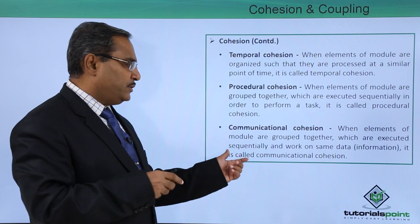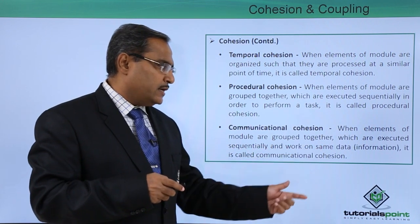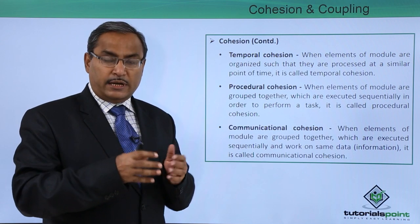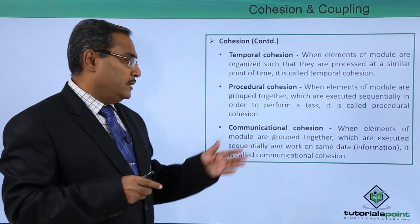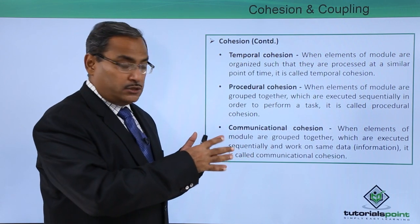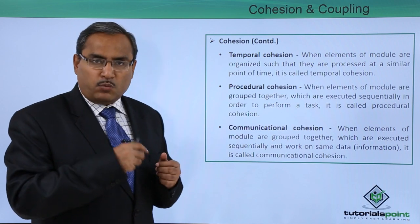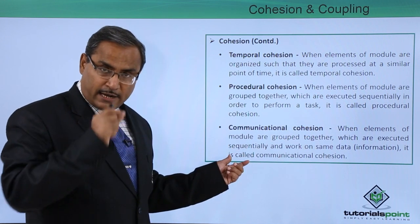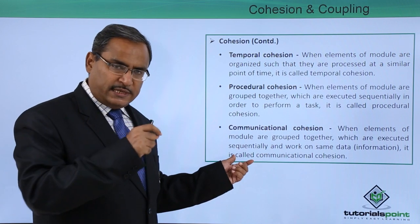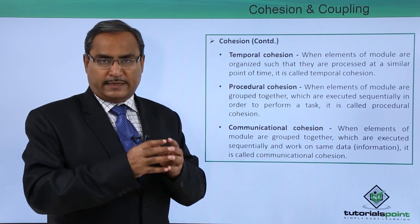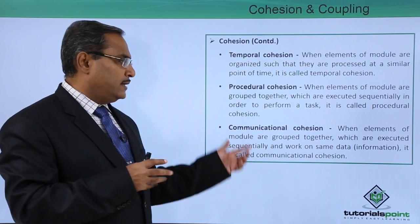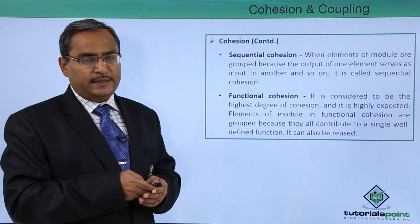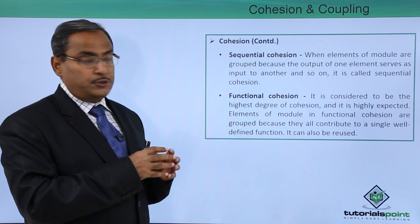The next type is communicational cohesion. When elements of a module are grouped together, executed sequentially, and work on the same data, it is called communicational cohesion. Instructions are executed sequentially one after another and work on the same data set — then that particular module is showing communicational cohesion.